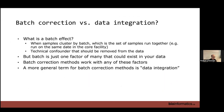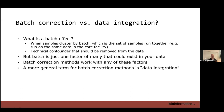What's the difference between batch correction and data integration? People sometimes use these terms interchangeably. In my view, a batch effect is a set of samples run together — on the same day at the core facility or using a particular individual — and that's a technical confounder that should be removed from the data. But a batch is just one factor of many that could exist in the data. We've talked about all sorts of factors — the cell cycle is one interesting potentially important factor.